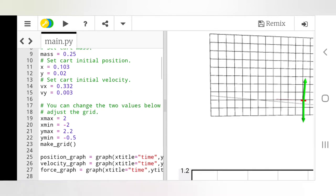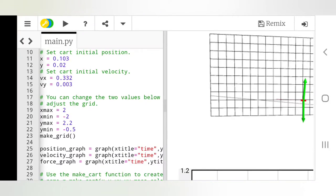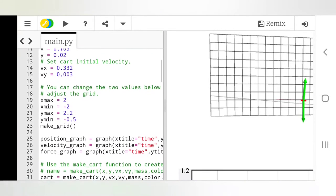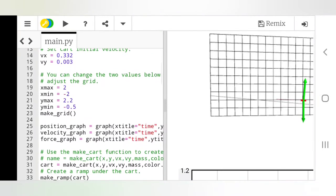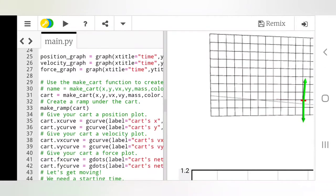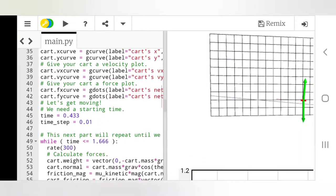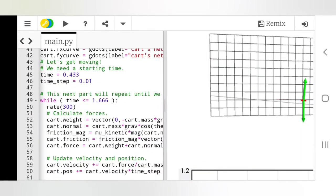Then the mass, it's 0.25, that's how much the cart weighs. Then we put the initial starting positions, initial starting velocity, which we all get from the graph. And down here, we will make the cart, make the graphs. And the time we want to start is 0.433, because that's the point in the video where we had good data. And that's where we got all those other numbers from. The time step, which is the delta t that the computer is going to update in the while loop. It's going to update every 0.01 seconds. So it will be very accurate.